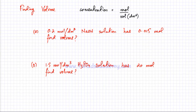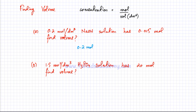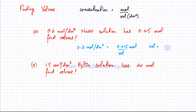Now we'll find volume given concentration and moles. In part (a), NaOH has a concentration of 0.2 mol/dm³ and 0.015 moles. Using 0.2 = 0.015 / volume, solving for volume gives 0.015 / 0.2 = 0.075 dm³.